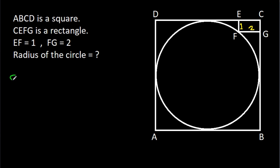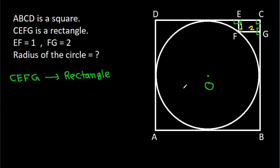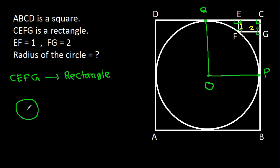Since CEFG is a rectangle, all its angles are 90 degrees. Suppose the center of this circle is O, and suppose this point is P and this point is Q. In any circle, the radius and tangent are perpendicular to each other, so the angle at P will be 90 degrees and the angle at Q will also be 90 degrees.